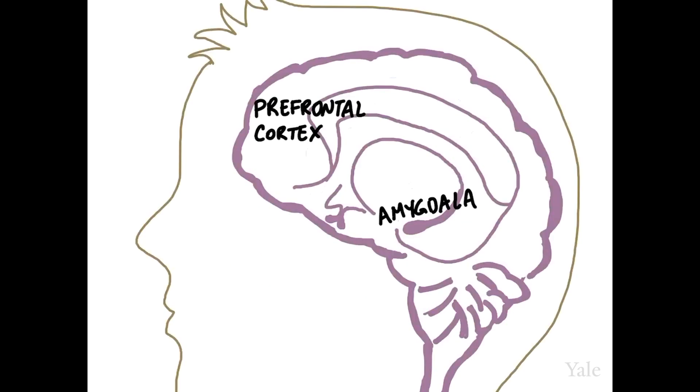The prefrontal cortex regulates emotional processing in different ways, including by regulating the amygdala itself. The connection between the two allows for the prefrontal cortex to dampen down the activity of the amygdala. Chronic stress can lead to structural changes in prefrontal cortex, so that weakened connections mean there's less inhibition of the amygdala. From there, the amygdala can become overactive and generate excessive or misdirected emotions in the form of anxiety.